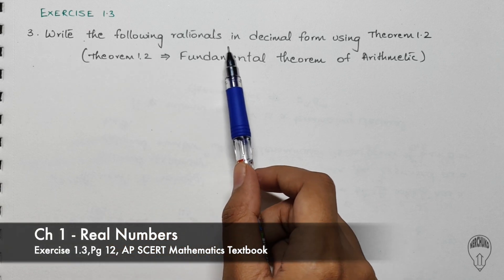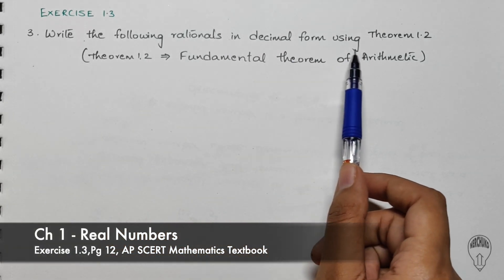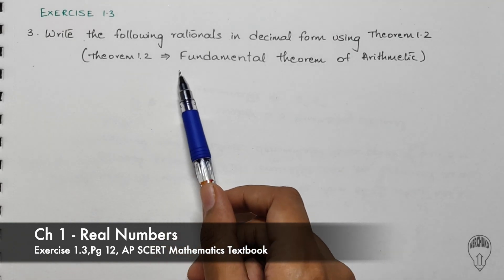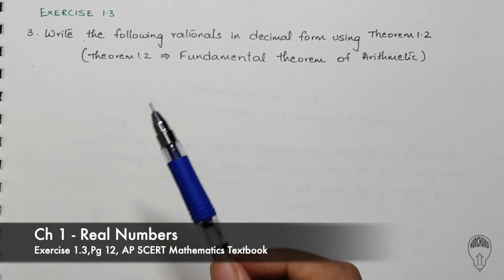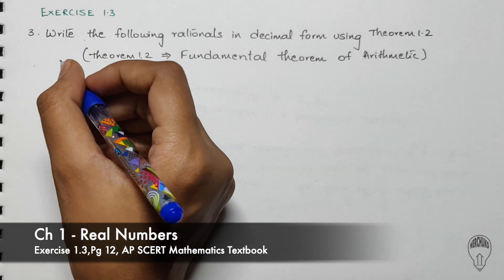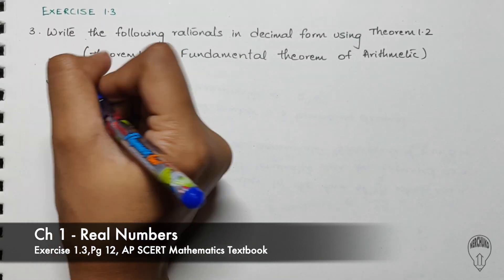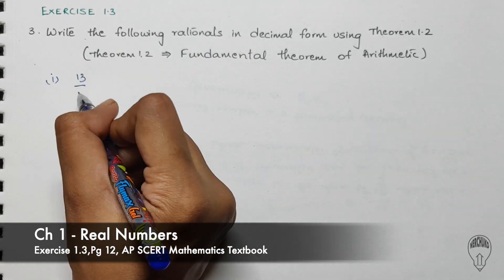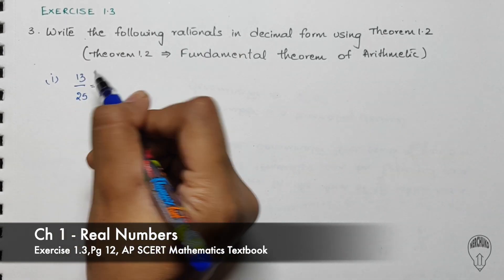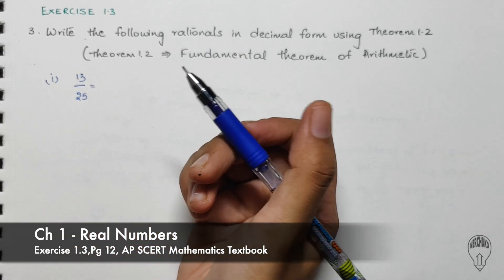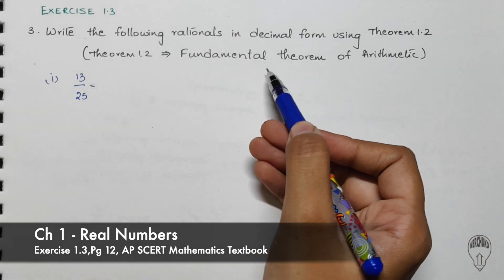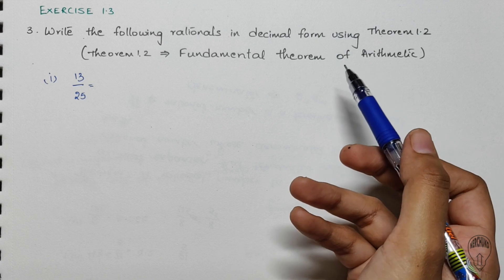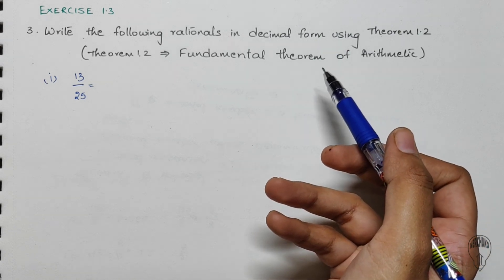Write the following rationals in decimal form using Theorem 1.2. Theorem 1.2 in the textbook is the Fundamental Theorem of Arithmetic. For the first problem we have 13 divided by 25. Without using long division we have to use this theorem. According to the Fundamental Theorem of Arithmetic, every composite number can be written as a product of primes.